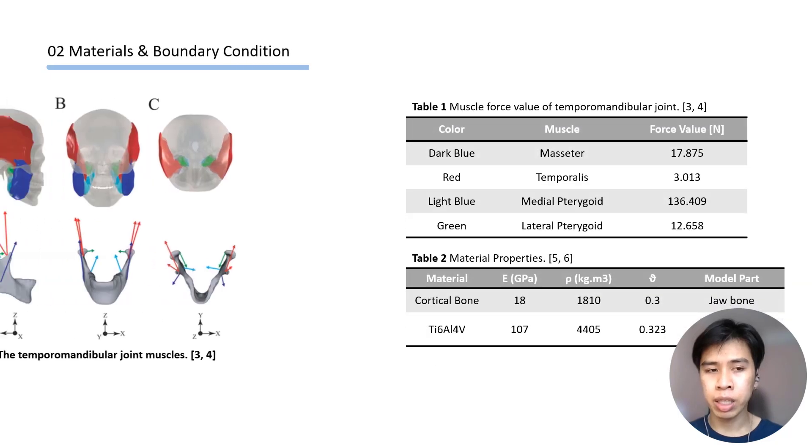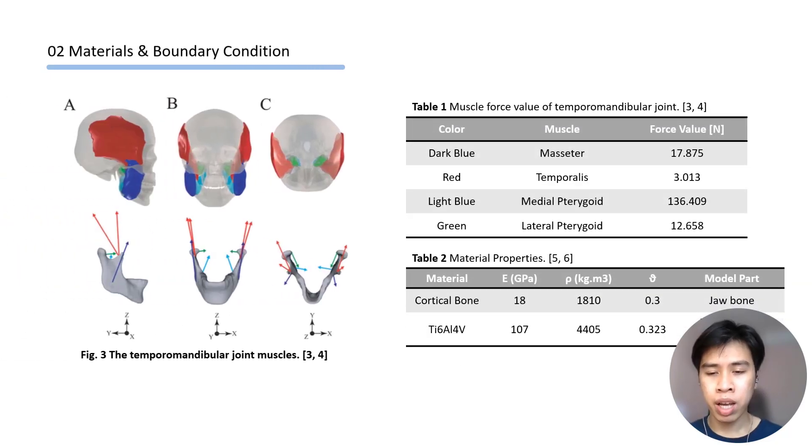The next part is about materials and boundary condition for the model. Of course, we want to evaluate the biomechanical property of the model, we must have the forces, the loads, and the materials. You can see in table 2-3 is the temporomandibular jaw muscles and its corresponding name and value. In table 2, we can see the material properties of cortical bone and the titanium alloy for the TMJ implant.